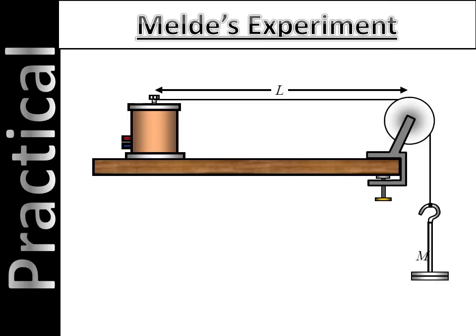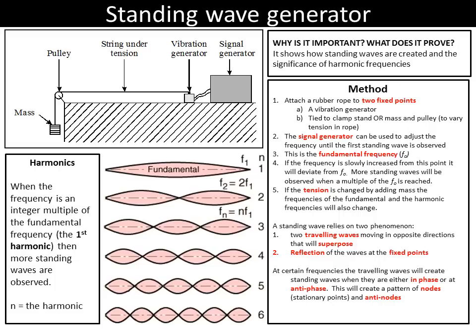An experiment you might have done in class, there's a link to it here, is Melde's experiment. You have a vibration generator and a rope under tension. When you apply a vibration with a signal generator, it moves up and down. You can pause the video for a minute if you want to read all this.